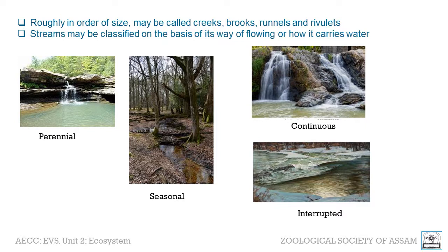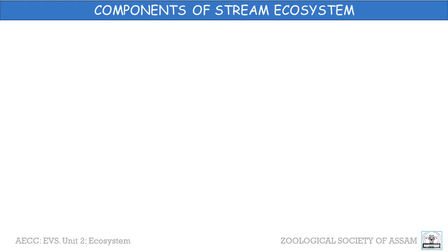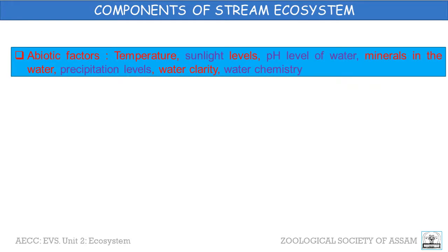The land around a stream is simply called a valley. Like other ecosystems, in a stream ecosystem the components are comprised of abiotic and biotic factors. Abiotic factors are defined as non-living things that affect and shape the ecosystem. The abiotic factors in a stream ecosystem include temperature, sunlight levels, pH level of water, minerals in the water, precipitation levels, water clarity, and water chemistry — including pH levels, nutrients such as minerals, chemicals, and gases — which are among the most important factors.